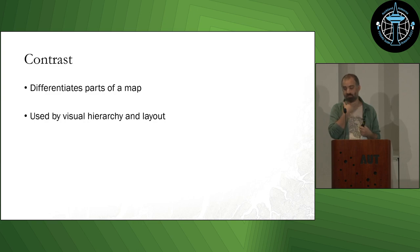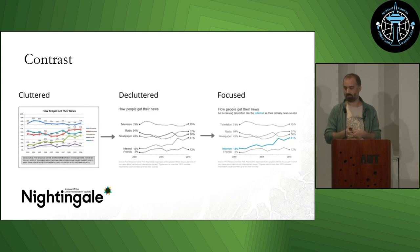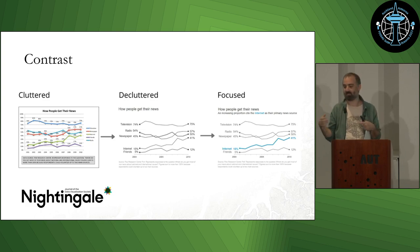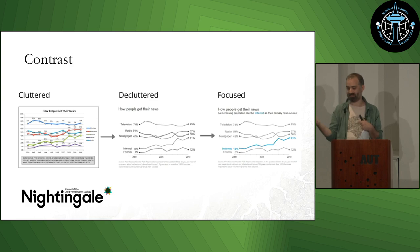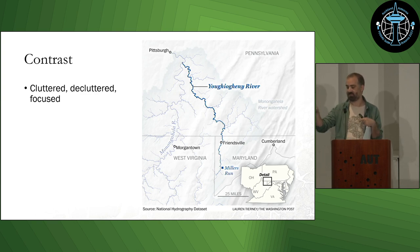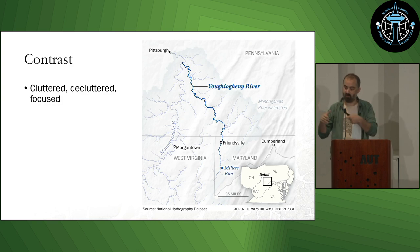Moving into contrast and how we differentiate — used by both visual hierarchy and layout. There's a really nice example from Nightingale with the idea of cluttered, decluttered, but focused. We can remove the clutter, but that's not enough because you still don't know where to look. With focus, you're stepped through — I tell you what to see first, I lead you through, and it breaks it up rather than presenting everything at once. This map example shows choices they've made: putting it in the centre, using layout, and the big bold text for visual hierarchy — focused on that piece of information.